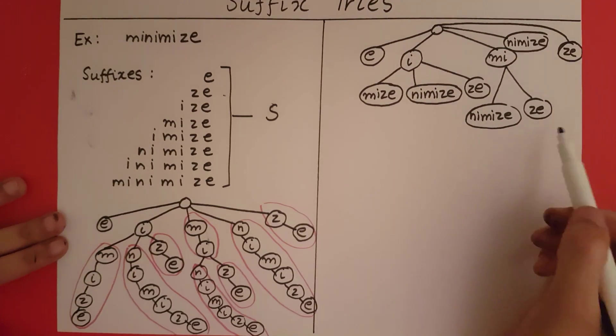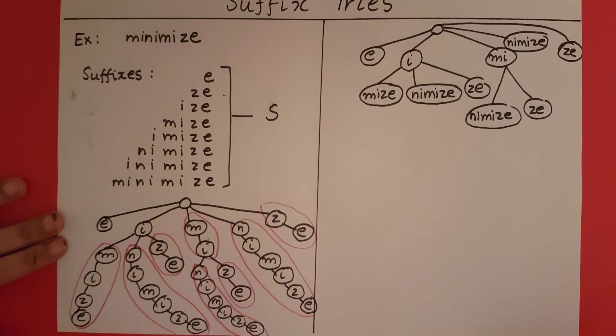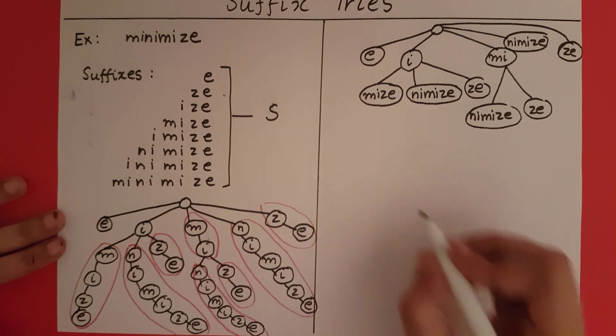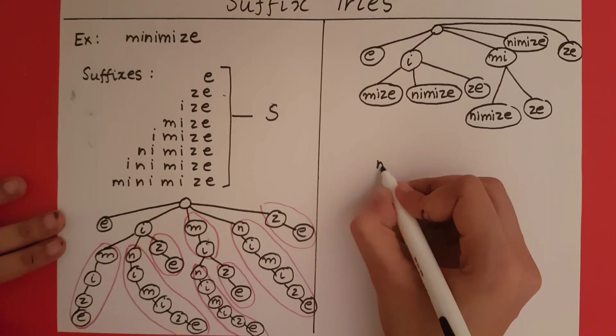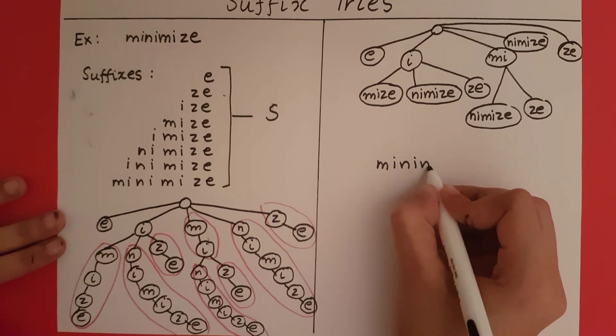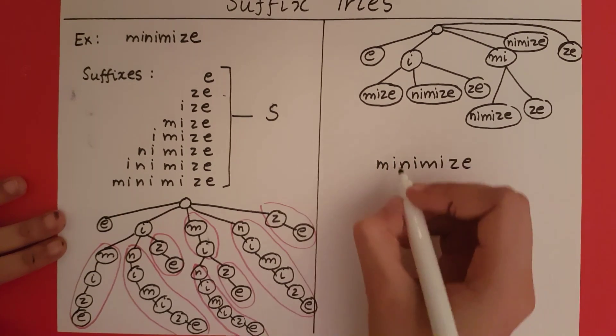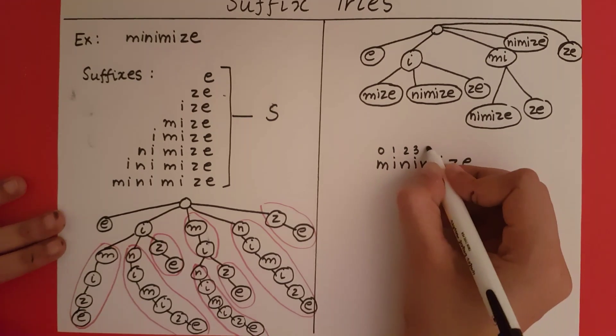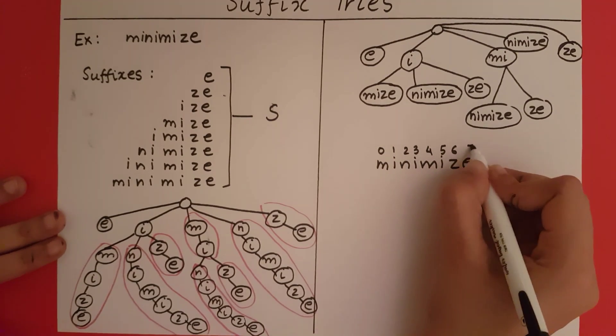So this is going to be our compressed trie. Now after this we have to represent the compressed trie using numbers. The indexes of minimize are going to be 0, 1, 2, 3, 4, 5, 6, and 7.